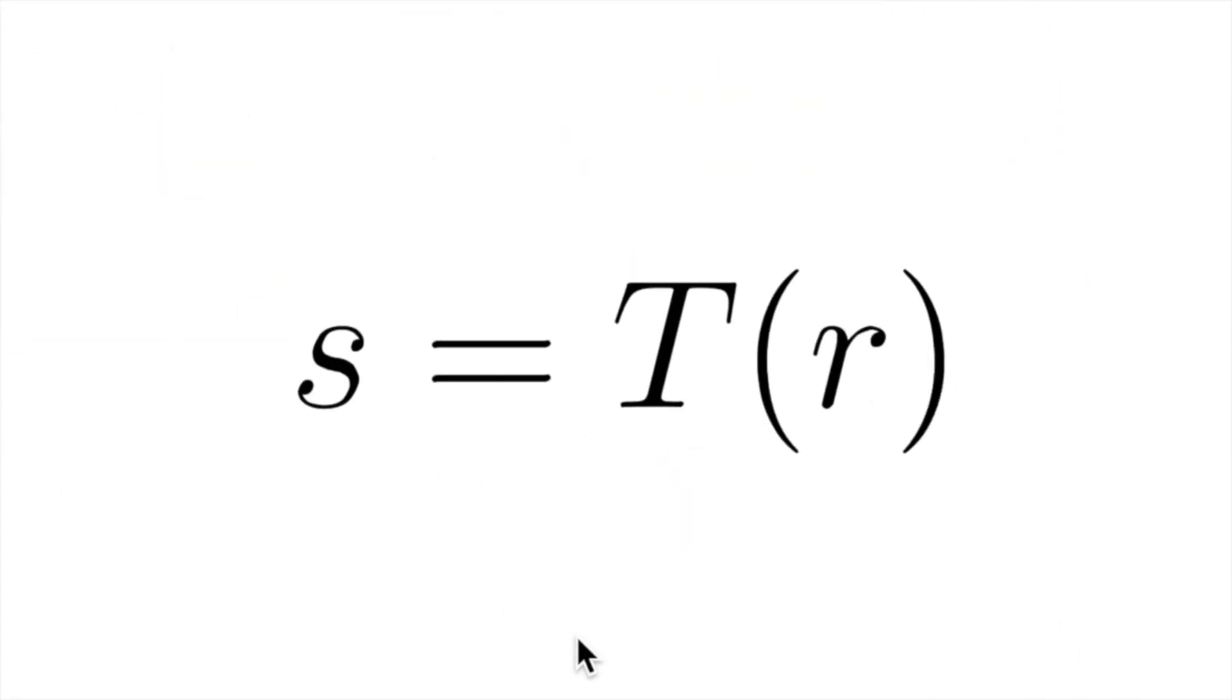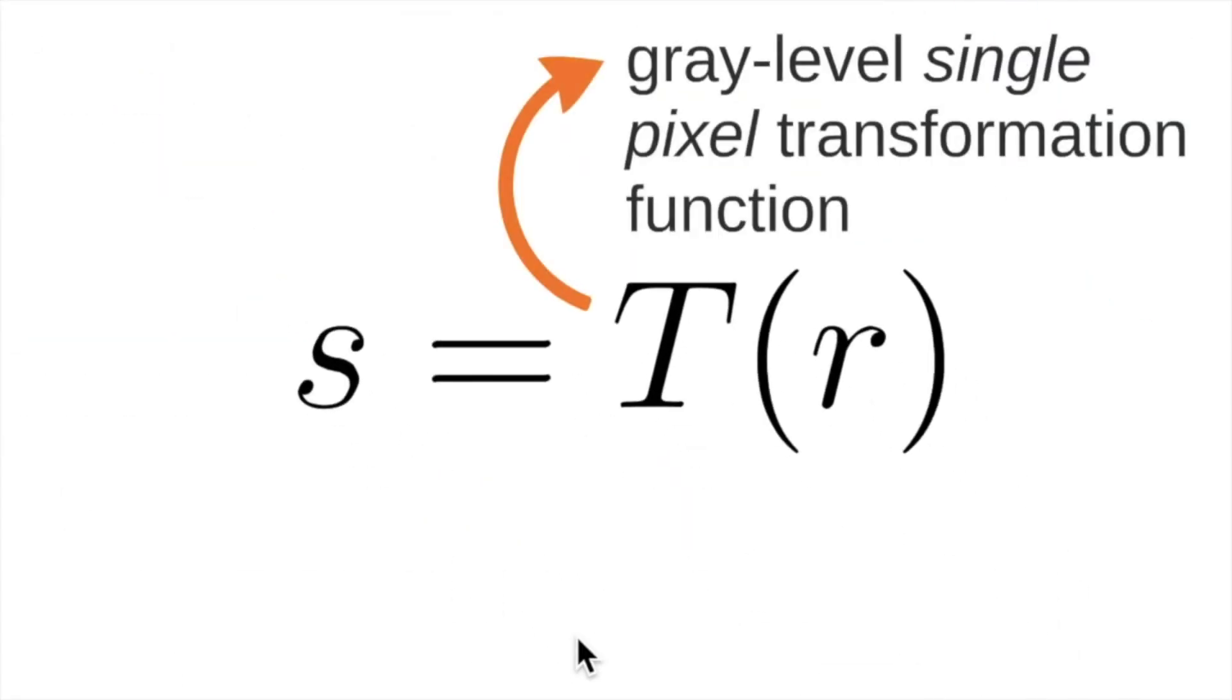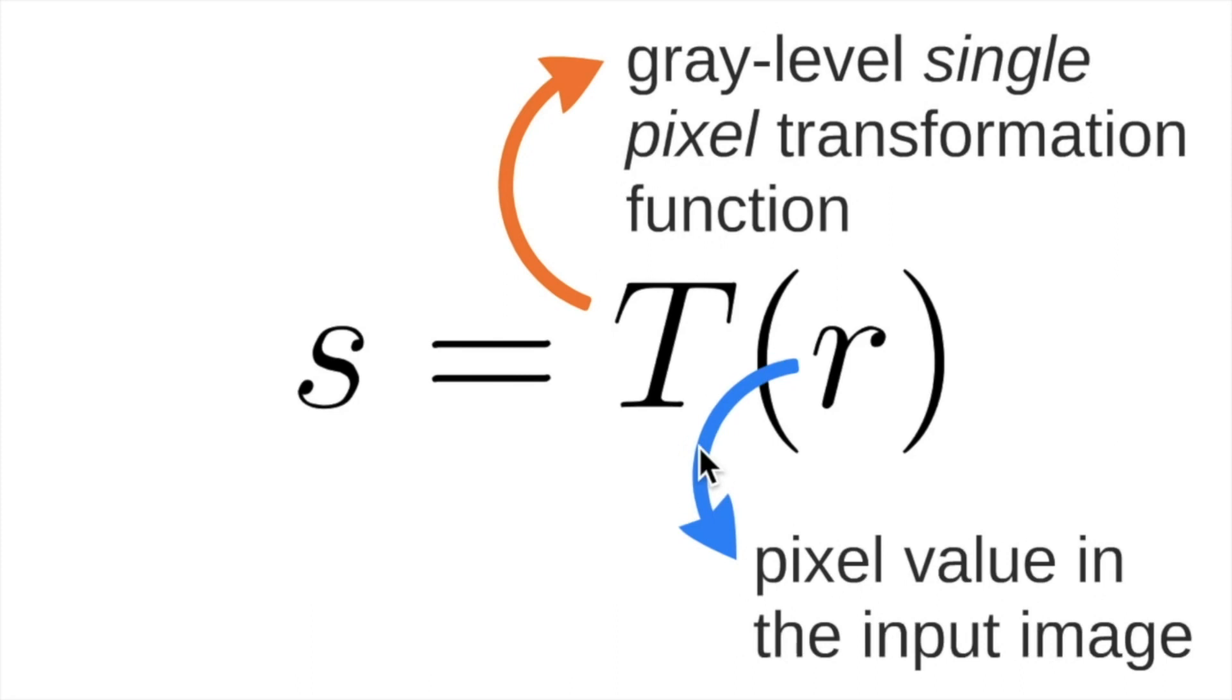We will show this very simple function, in which T means a gray level single pixel transformation function. R is the pixel value in the input image, and we get the output represented by this term here. We will see different types of transformation functions in order to get the original image and enhance them according to our needs.